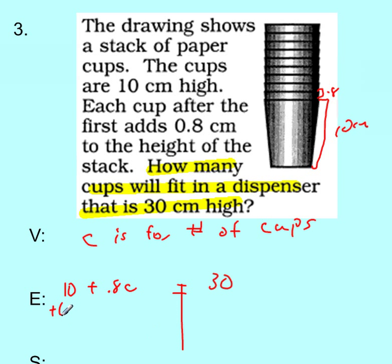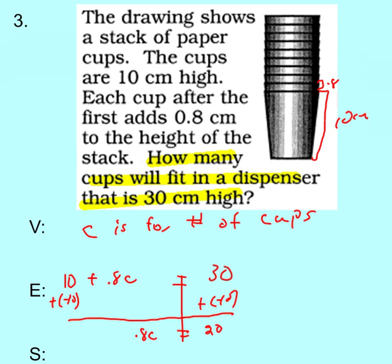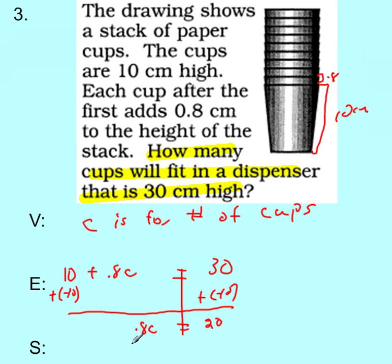Now, we add negative 10 to both. That's our expression now. Add negative 10 to both sides. We get 0.8C is equal to 20. Now, we're going to divide by 0.8. 20 divided by 0.8. So we get C is equal to 25 cups.